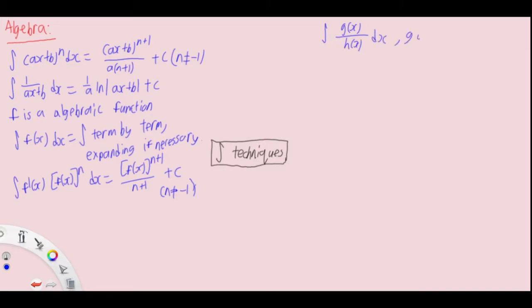For g(x) over h(x), there's no directly integrable form. First, ensure the degree of g is less than the degree of h.